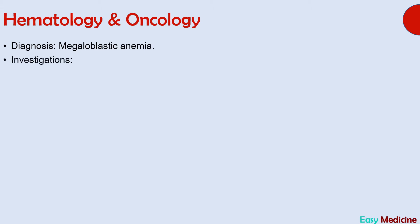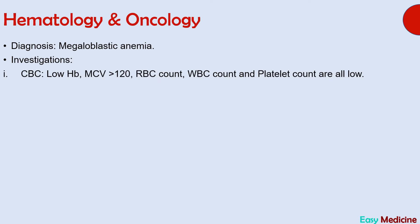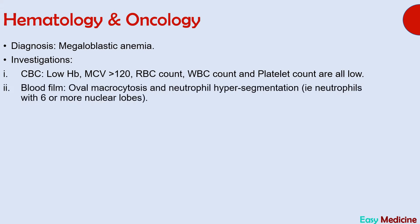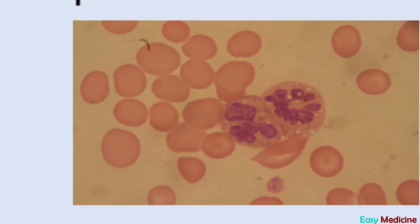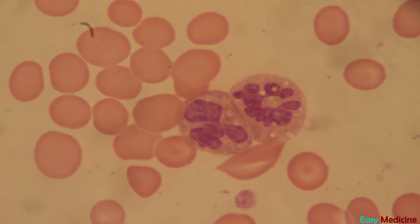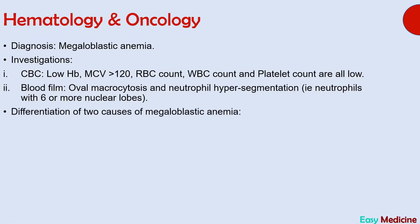The question also asked about initial investigations and abnormalities found in them. Investigations done in this type of anemia include complete blood count, which will show low hemoglobin, increased MCV, and decreased red blood cell, white blood cell, and platelet count. Peripheral blood film can also be done, which will show oval macrocytosis and hypersegmented neutrophils — neutrophils which have six or more nuclear lobes. Red cells are larger and oval in shape, confirming megaloblastic anemia.